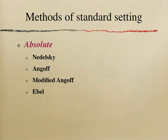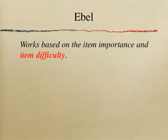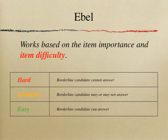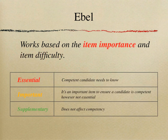Another very commonly used method is the Ebel method, which works based on item importance and item difficulty. In terms of item difficulty, questions are divided into three categories: hard — a borderline candidate cannot answer it; moderate — a borderline candidate may or may not answer it; and easy — a borderline candidate can answer it.